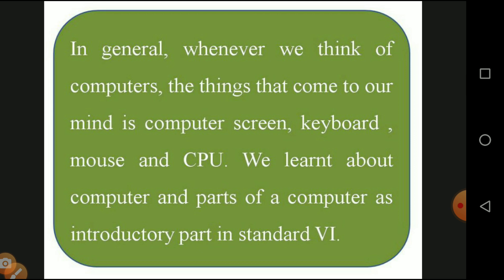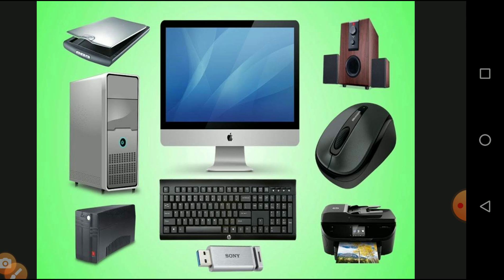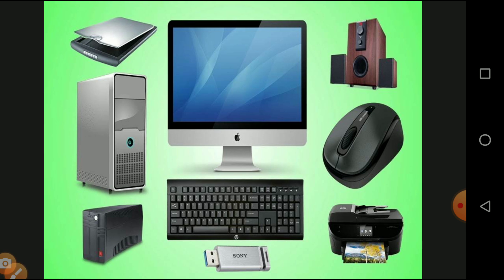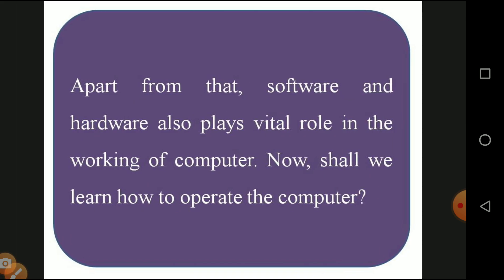Today's topic is textual content. Nowadays we see various types of computers in the form of desktop computers, laptops, tablets, and mobile accessories. When we think of a computer, what comes to mind is a screen, keyboard, mouse, and CPU — these are the external input and output units. We learned about the parts of the computer in the introductory part from 6th standard. This diagrammatic representation shows the parts of the computer: monitor, CPU, keyboard, mouse, and other input/output devices.